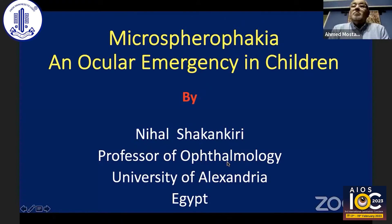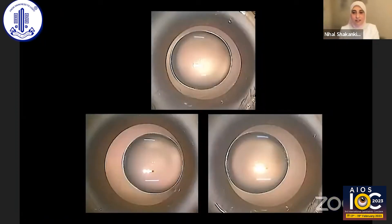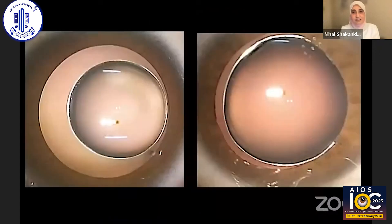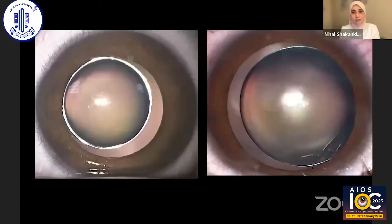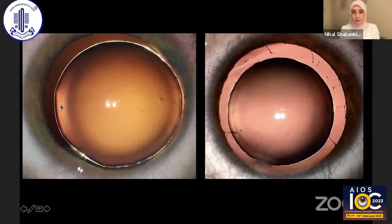Thank you for your kind invitation to participate in your meeting. I'm going to present microspherophia as a pediatric ocular emergency. Microspherophia is a small spherical lens. It is variable in size — it may be small or large — and variable in the degree of sphericity. It may be a total sphere, or sometimes spherical at the center and flat at the periphery.